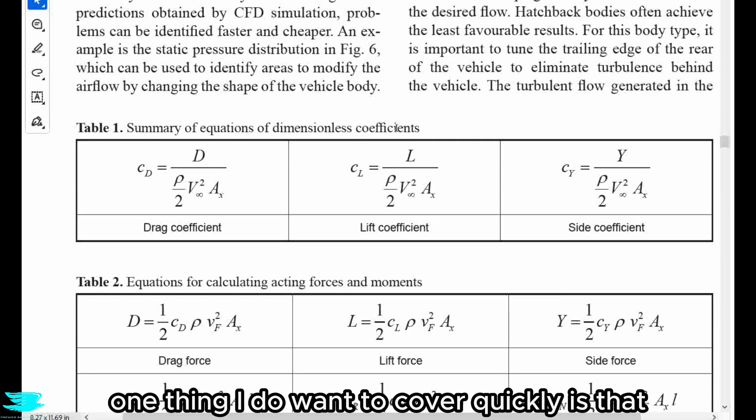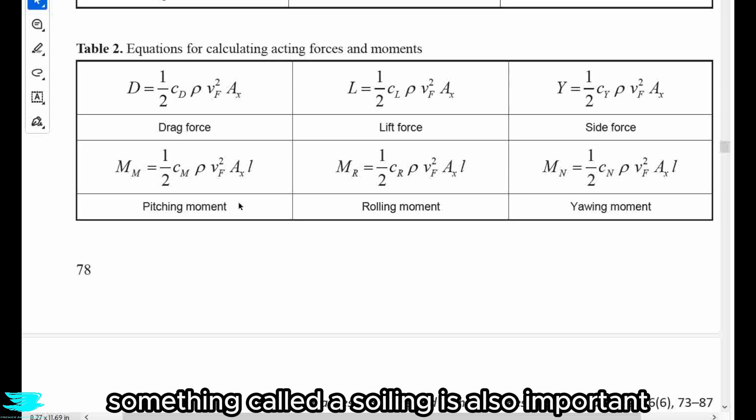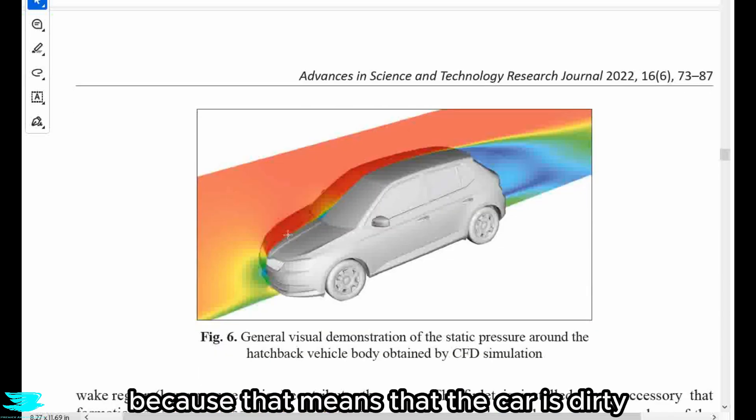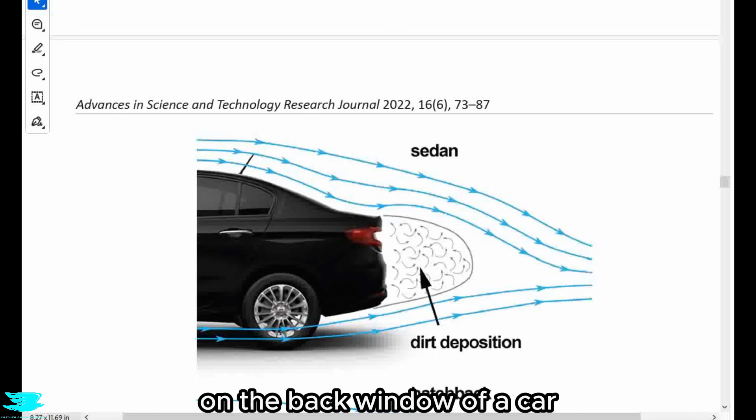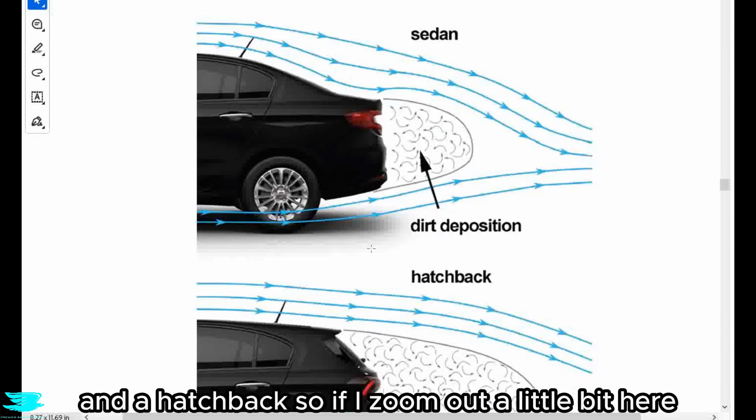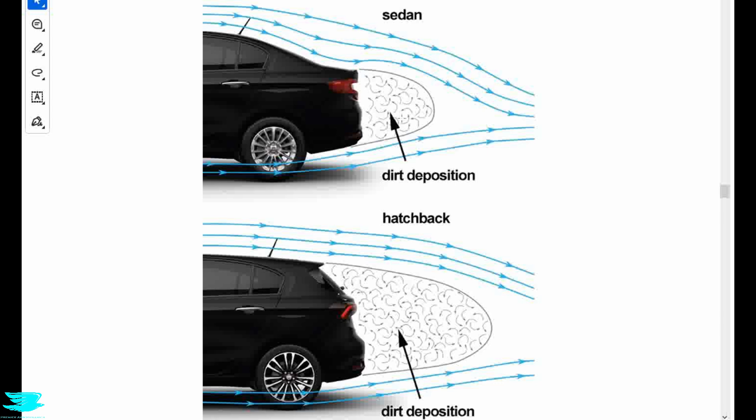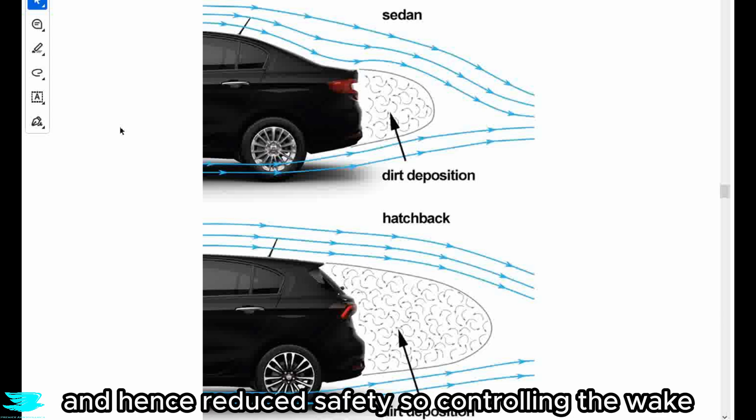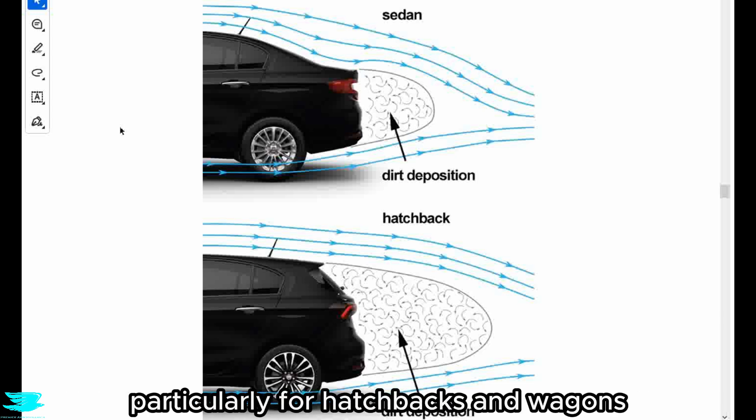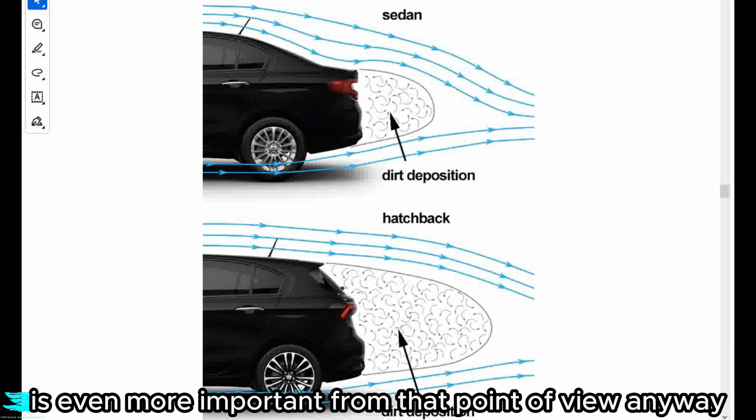So anyway, one thing I do want to cover quickly is that in addition to the pure aerodynamics of a car, something called soiling is also important. No one wants a soiled car because that means that the car is dirty. Now on figure 7, this shows the soiling process on the back window of a car, as well as the difference between a sedan and a hatchback. The recirculating flow in any wake really can carry dirt and deposit it on the car. That is especially bad when it comes to the windows because of the reduced visibility and hence reduced safety. So controlling the wake, particularly for hatchbacks and wagons and four-wheel drives as well, is even more important from that point of view.